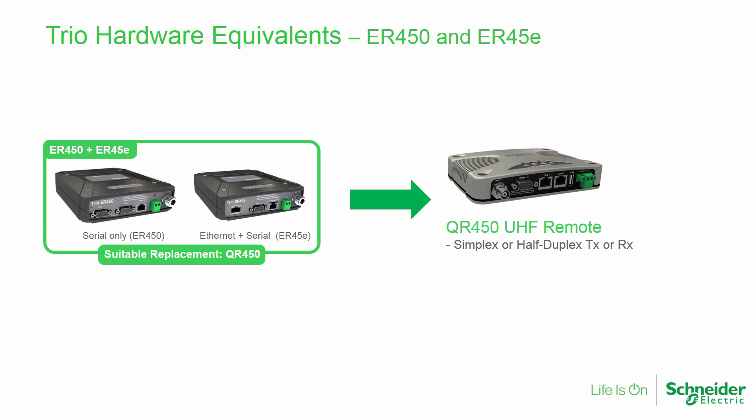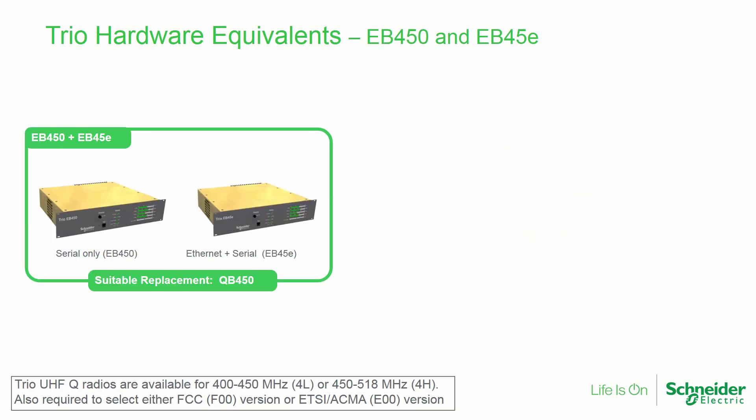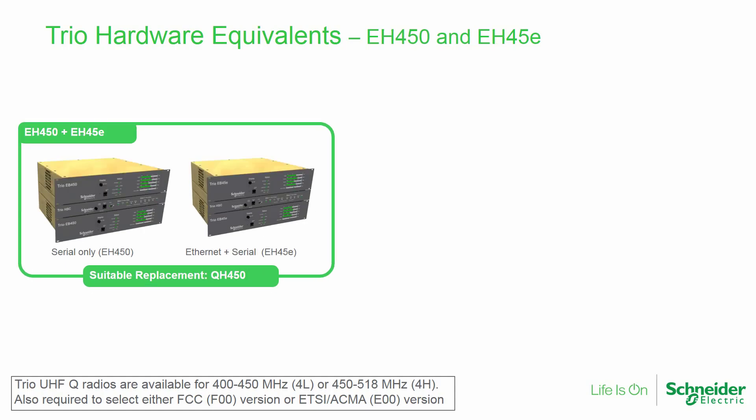The serial-only ER450 and Ethernet serial ER45E simplex or half-duplex remote type radios may be replaced with the QR450. Note that two frequency ranges are available for the Q data radio: either 400 to 450 MHz or 450 to 518 MHz. Also, two regulatory types are available: the FCC version, and the ETSI and ACMA versions. The EB450 and EB45E full duplex base or repeater models are both replaced by the rack-mountable QB450. The EH450 and EH45E hot standby full duplex models are both replaced by the QH450.